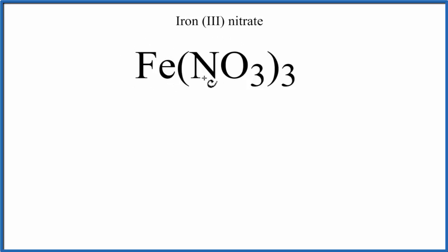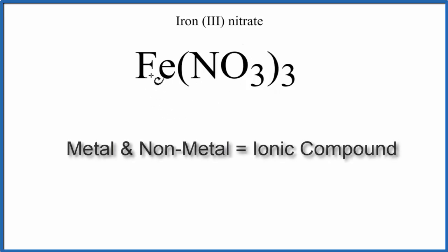Iron is a metal, and then we have nitrogen and oxygen, those are nonmetals. They're bound together in what's called a polyatomic ion, and we have three of these NO₃s. Since we have a metal and nonmetals, we have an ionic compound.